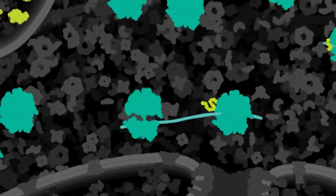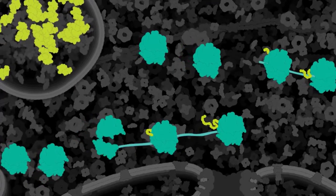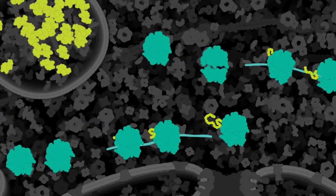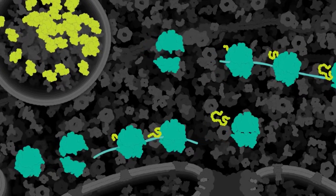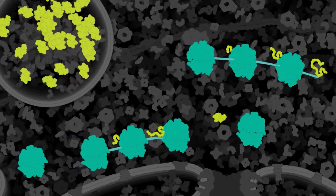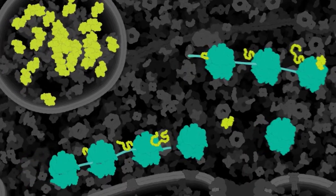Multiple ribosomes can read each mRNA copy to build many luciferase proteins at a time. When the ribosomes finish reading the mRNA, the proteins are released and they fold into their final shape. The ribosomes can read the mRNA again to make even more luciferase.